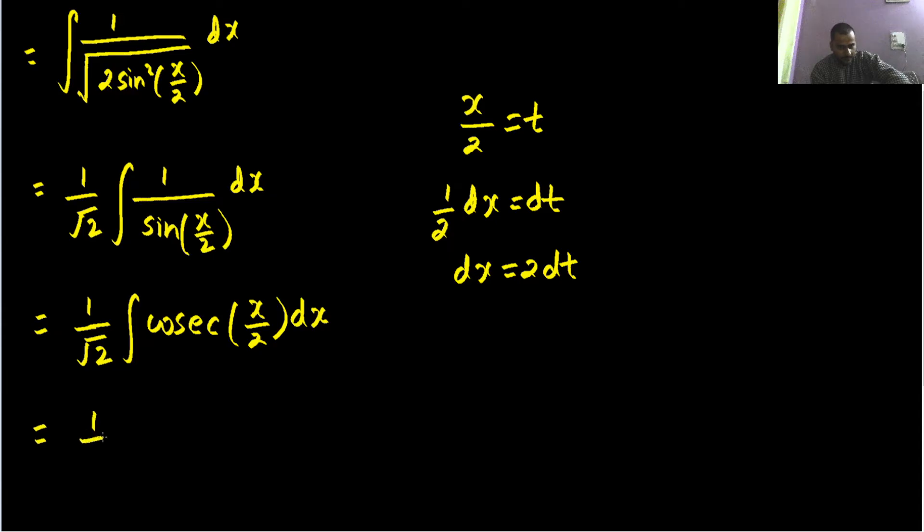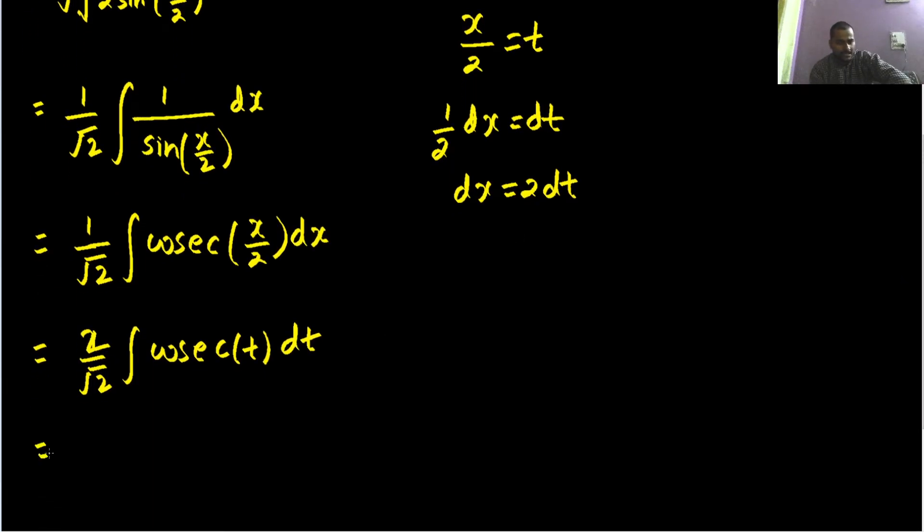So 1 by root 2, cosecant x by 2 is t and in place of dx you have twice dt. So 2 will go out and dt. Integration of cosecant t will be again 2 by root 2 will give you root 2.